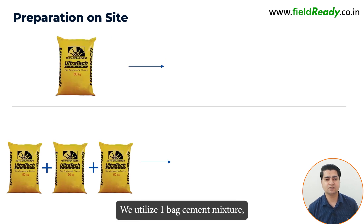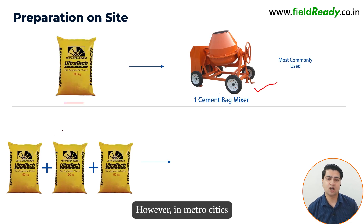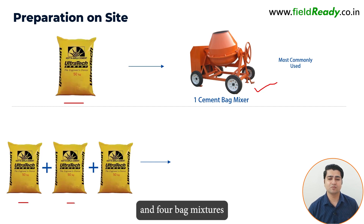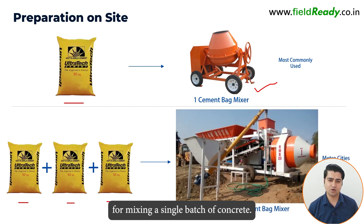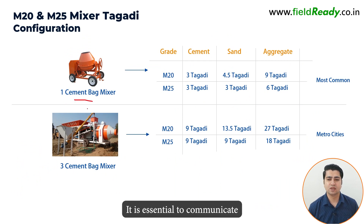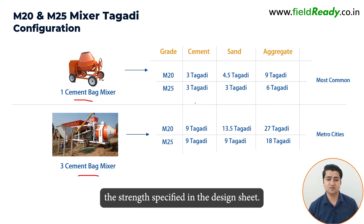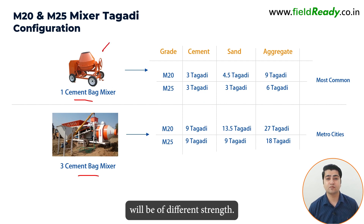Typically on site, we utilize a 1-bag cement mixture, allowing us to put only 1 bag of cement at a time. However, in metro cities, we are increasingly adopting 3 and 4 bag mixtures. The tagadi configuration for mixing a single batch of concrete for different mixtures are as follows. It's essential to communicate these details to the contractor to ensure that the concrete achieves the strength specified in the design sheet.